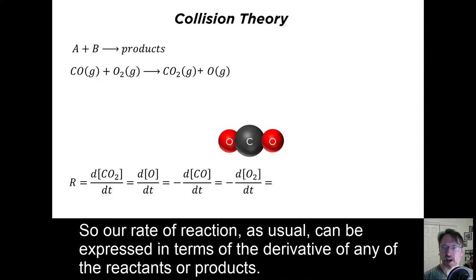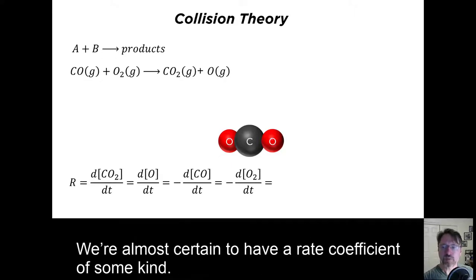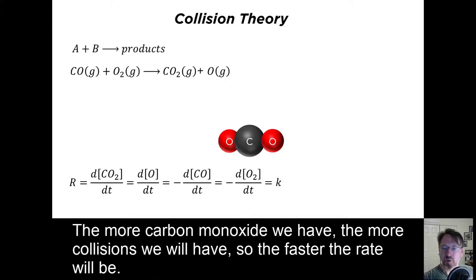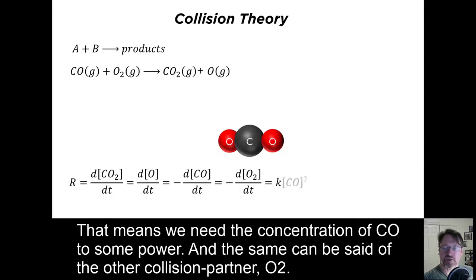So our rate of reaction, as usual, can be expressed in terms of the derivative of any of the reactants or products. We are almost certain to have a rate coefficient of some kind. The more carbon monoxide we have, the more collisions we will have, so the faster the rate will be. This means we need the concentration of CO to some power. And the same can be said of the other collision partner, O2.